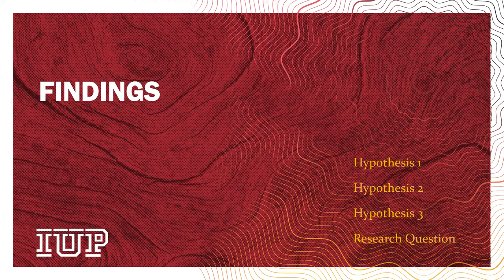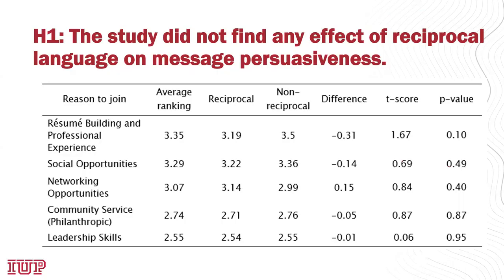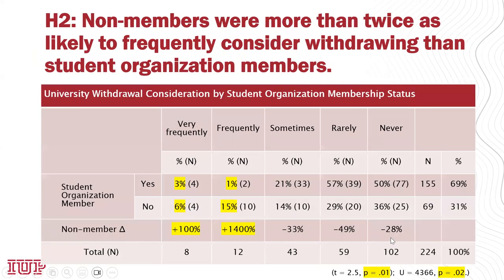Let's go ahead and head into the findings. Relating to hypothesis number one, the study really didn't find any effect of reciprocity versus non-reciprocity. The literature review suggested a strong possibility of finding a difference, and towards the end of the presentation I will put that into some context. The p-value shows there was really no statistical significance among any of these experimental variables.